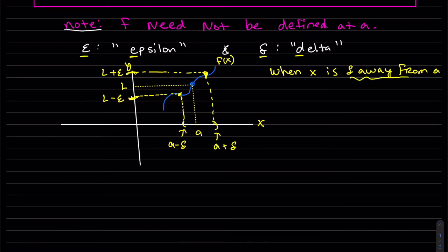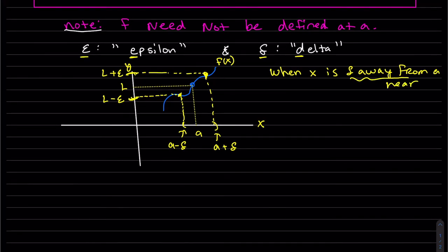So when we're near a, by the way, epsilon and delta are distances, and they're very small distances. This distance is delta, so when x is a delta away from a, then y is an epsilon away from L.